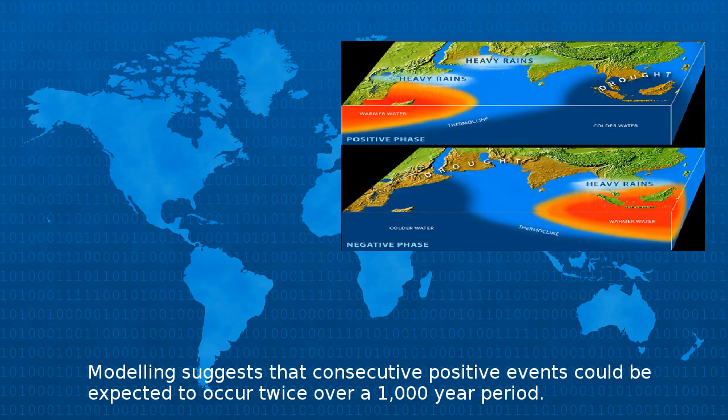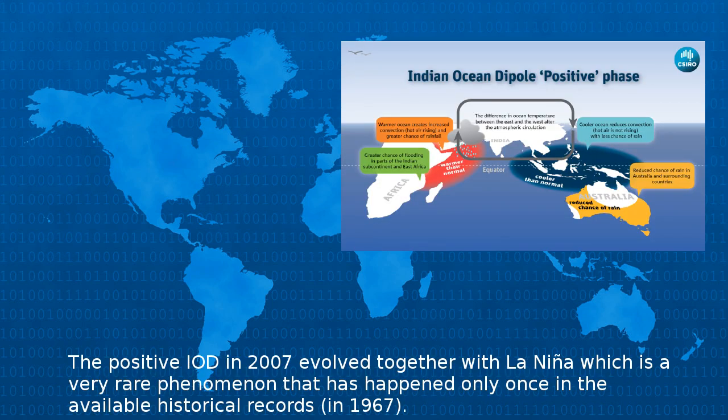Modelling suggests that consecutive positive events could be expected to occur twice over a 1,000-year period. The positive IOD in 2007 evolved together with La Niña, which is a very rare phenomenon that has happened only once in the available historical records.